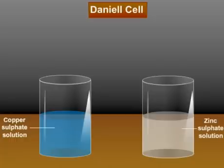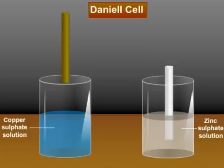Let's now take a zinc rod and dip it in zinc sulphate solution. And let's dip a copper rod in copper sulphate solution.